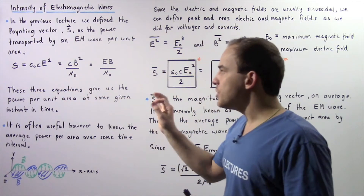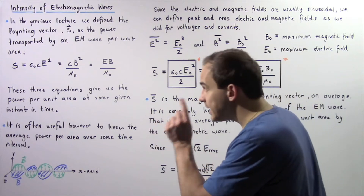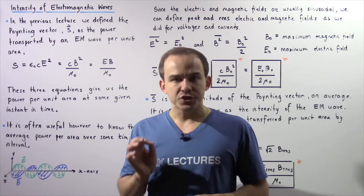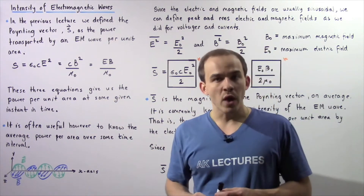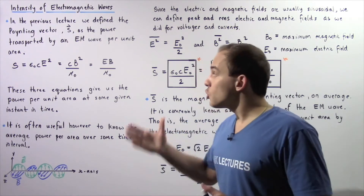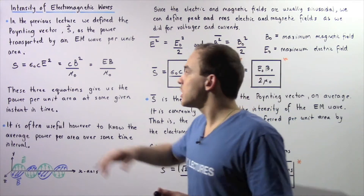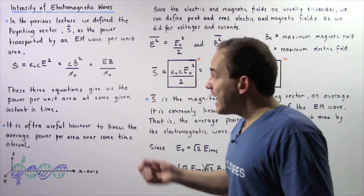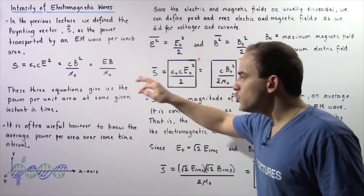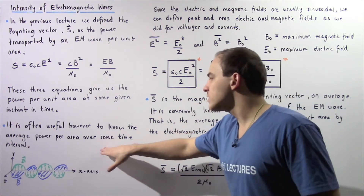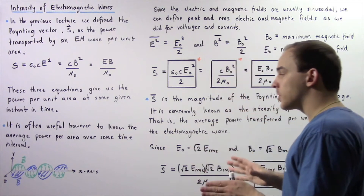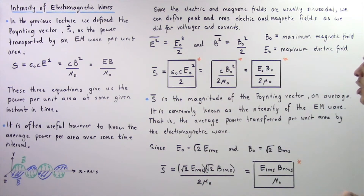What exactly do these equations give us? These three equations give us the power per area transported by our electromagnetic wave at some given moment in time — essentially the instantaneous value of the Poynting vector. It is often useful, however, to know the average power per area over some extended interval of time. This average power per area, as we'll see in just a moment, is known as the intensity of the electromagnetic wave.